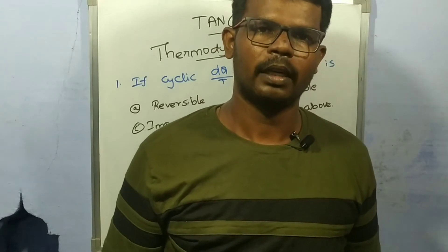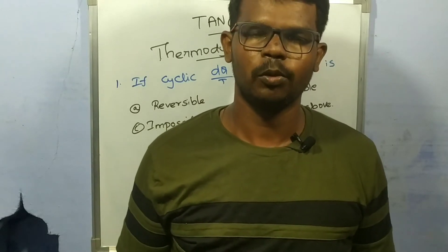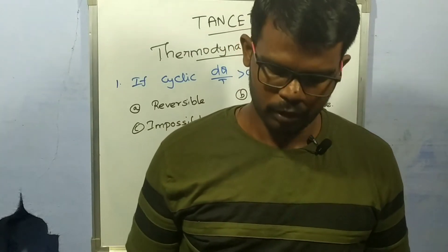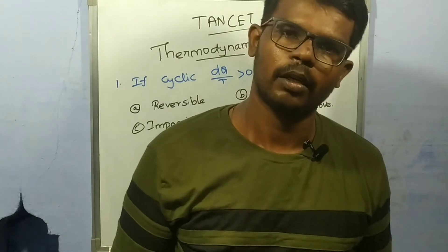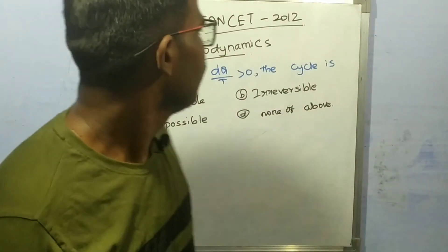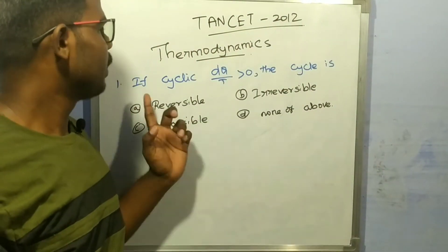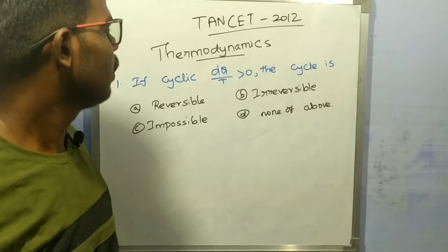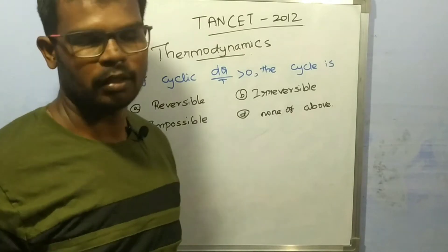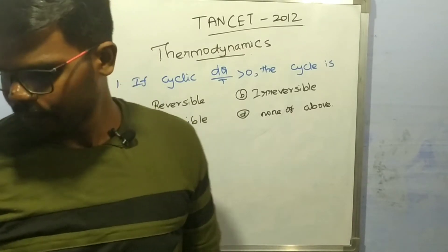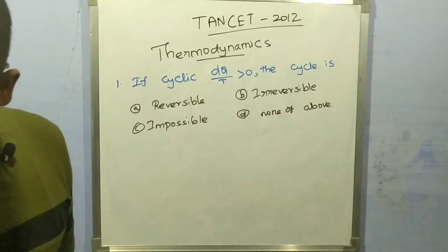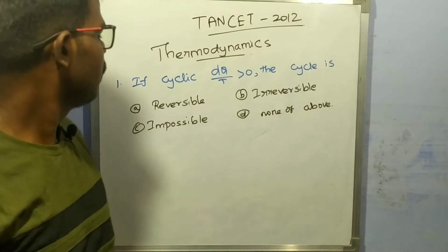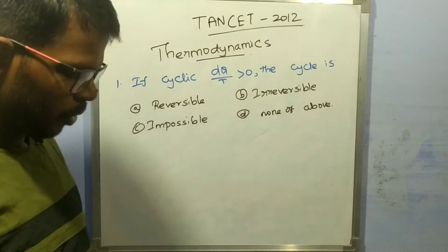We will have a question about GATE 2012 thermodynamics. First question: if cyclic integral of dQ/T is greater than zero, the process is — options are: irreversible, irreversible, impossible, and none of the above.